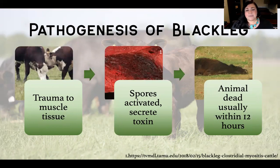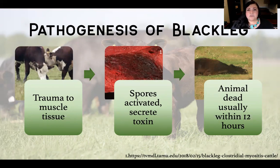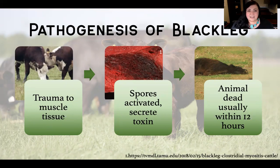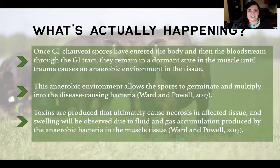For this activation to happen, we need some sort of trauma to happen to the muscle tissue — whether that is cattle playing or fighting in the pasture, or something that happens during transit or handling. There has to be some sort of trauma happen to the muscle tissue, some sort of bruising to create an anaerobic environment, a loss of oxygen, which will allow these spores to secrete their toxin. And once that happens, once you see clinical signs, that animal is typically dead between 12 to 24 hours of onset of clinical signs.